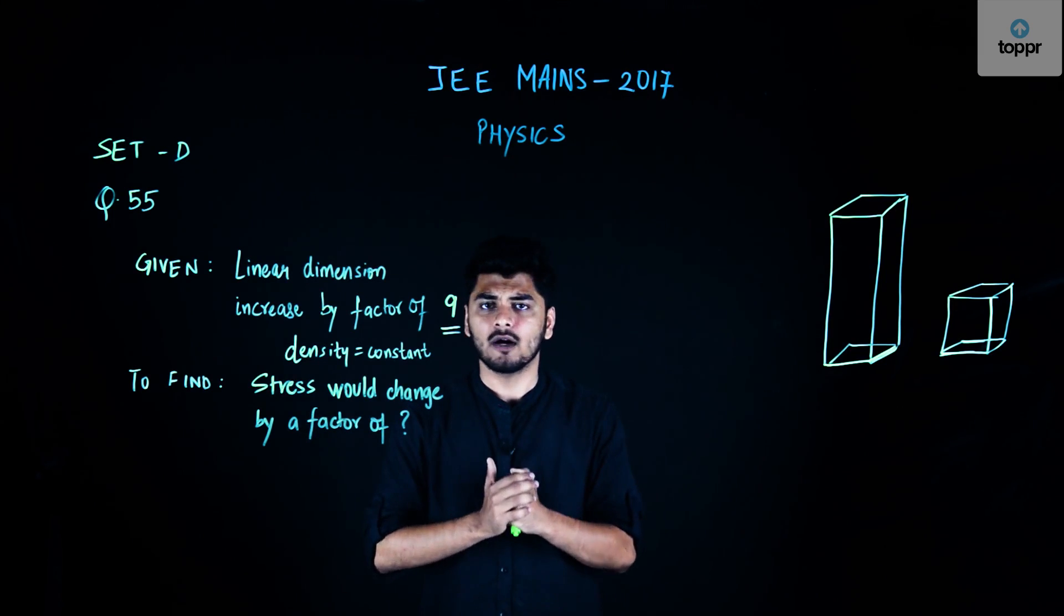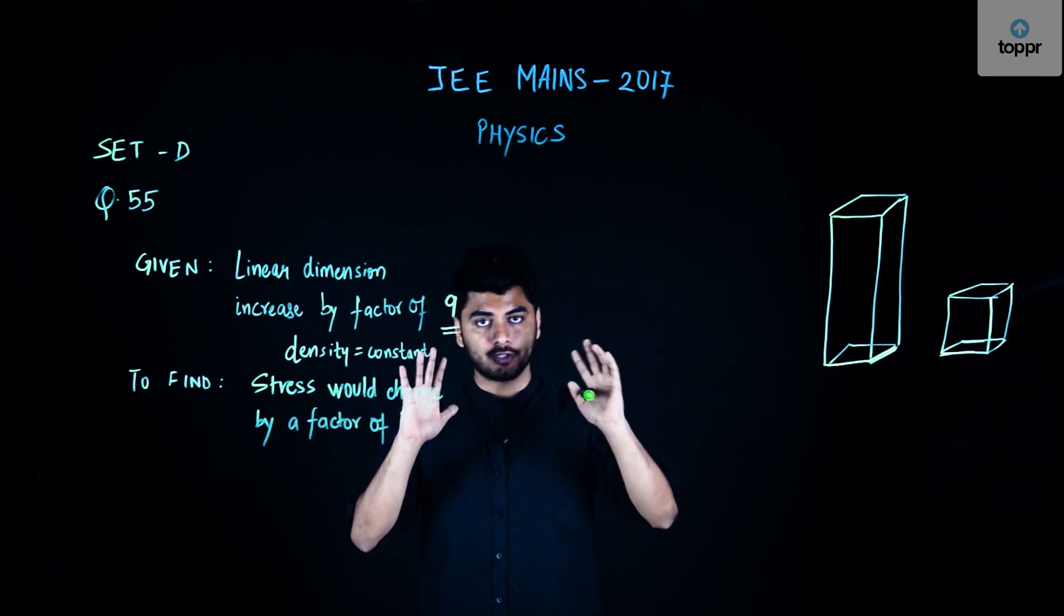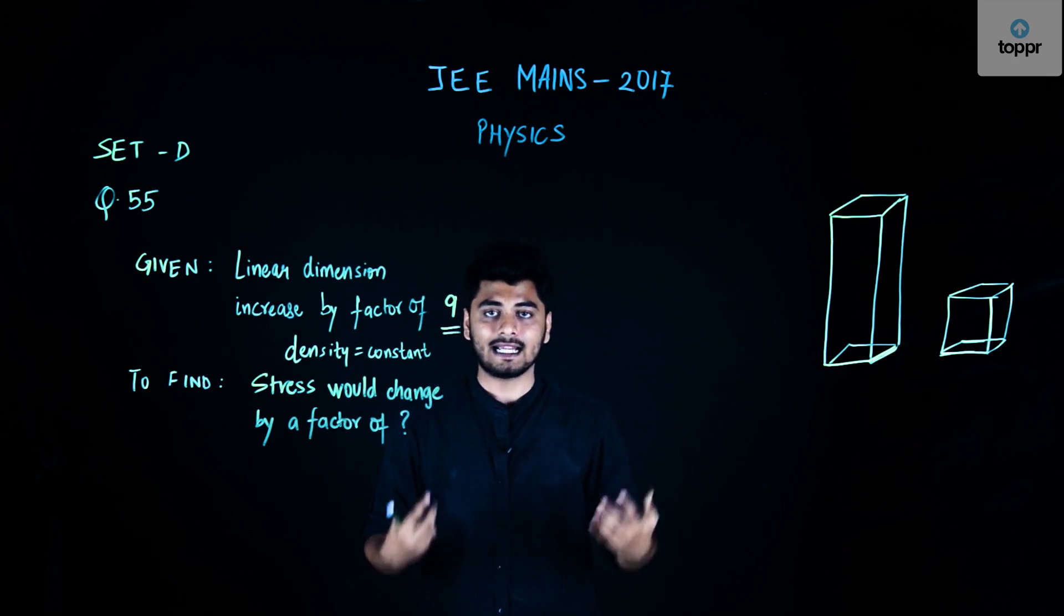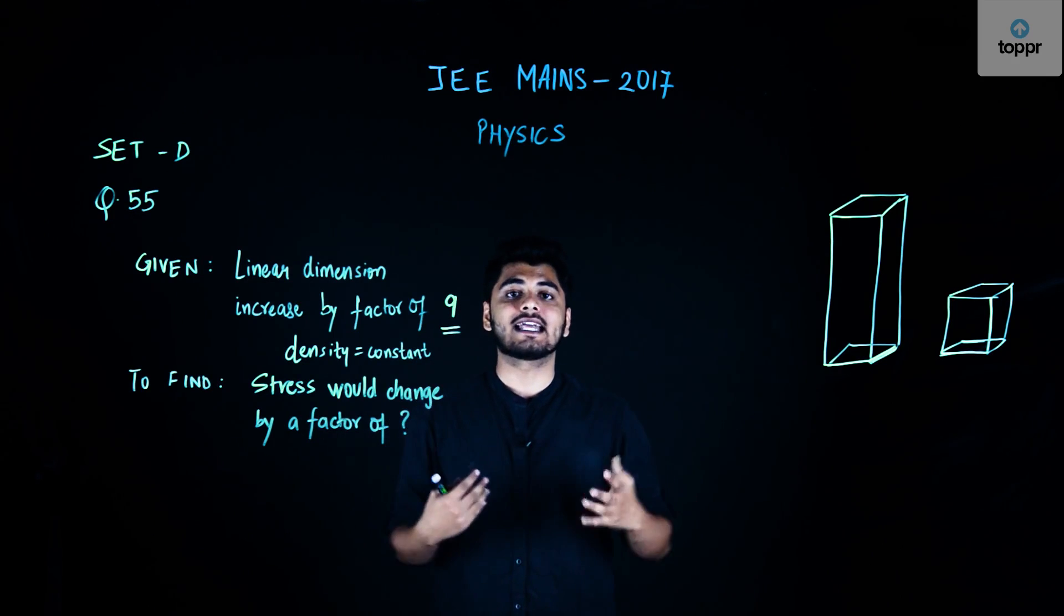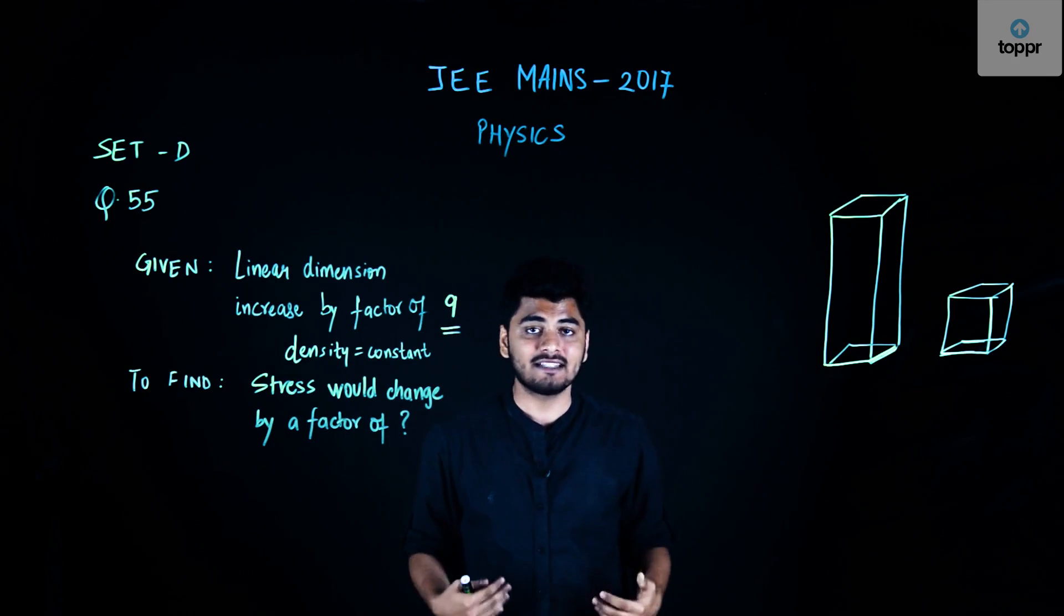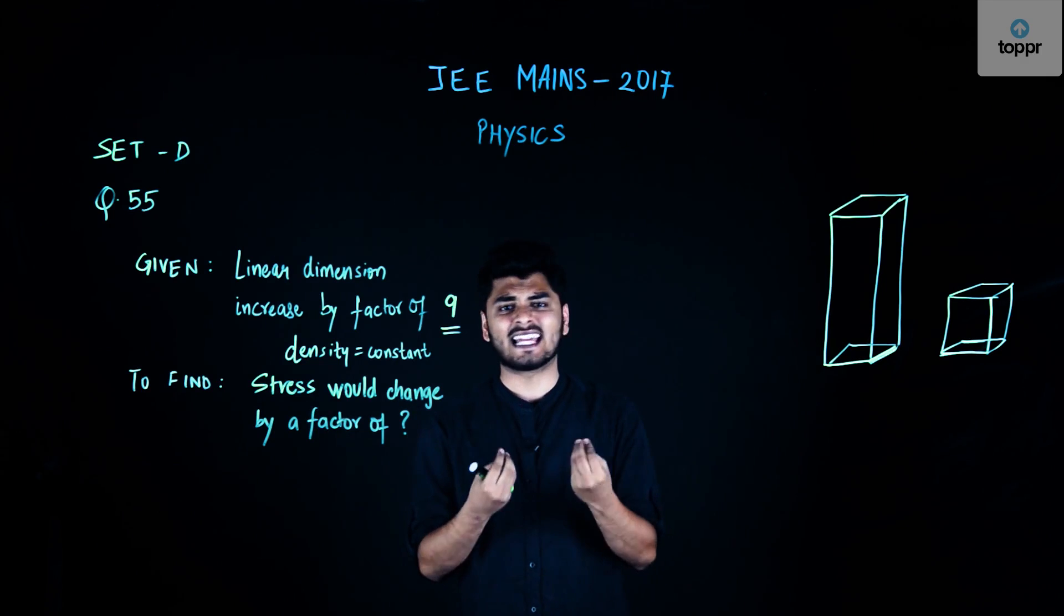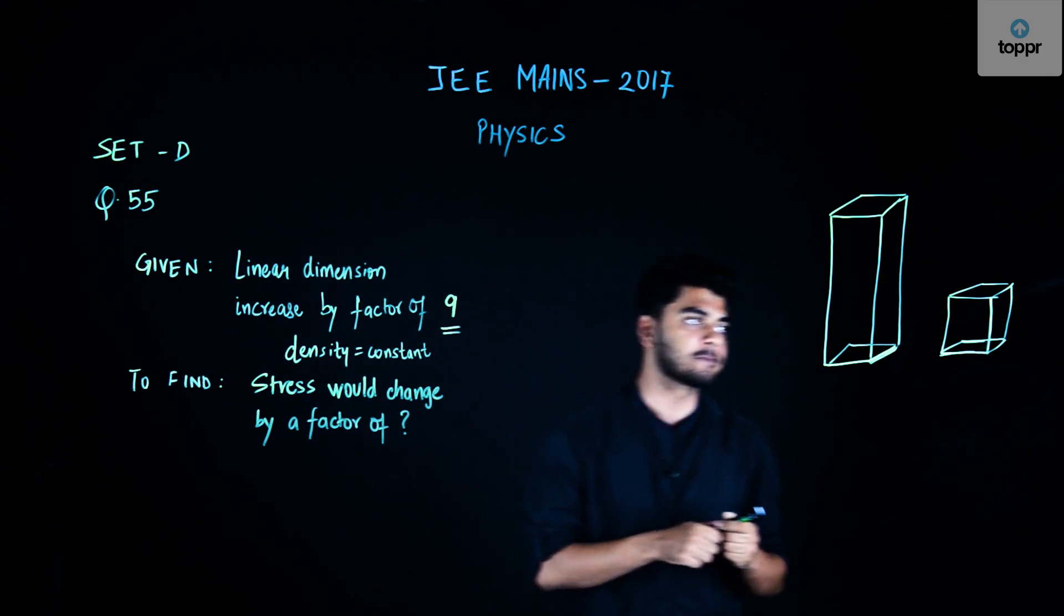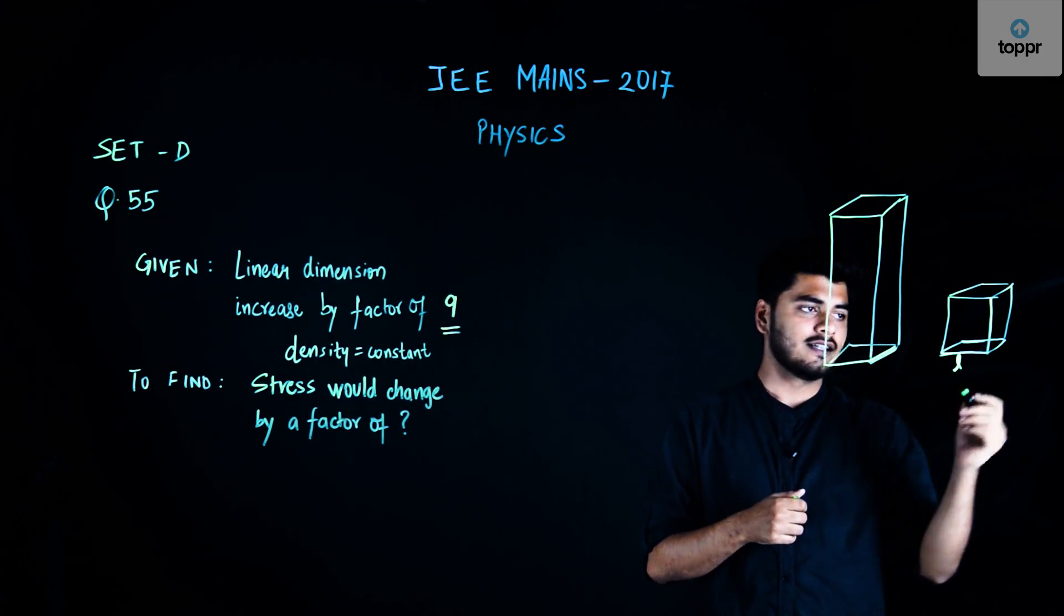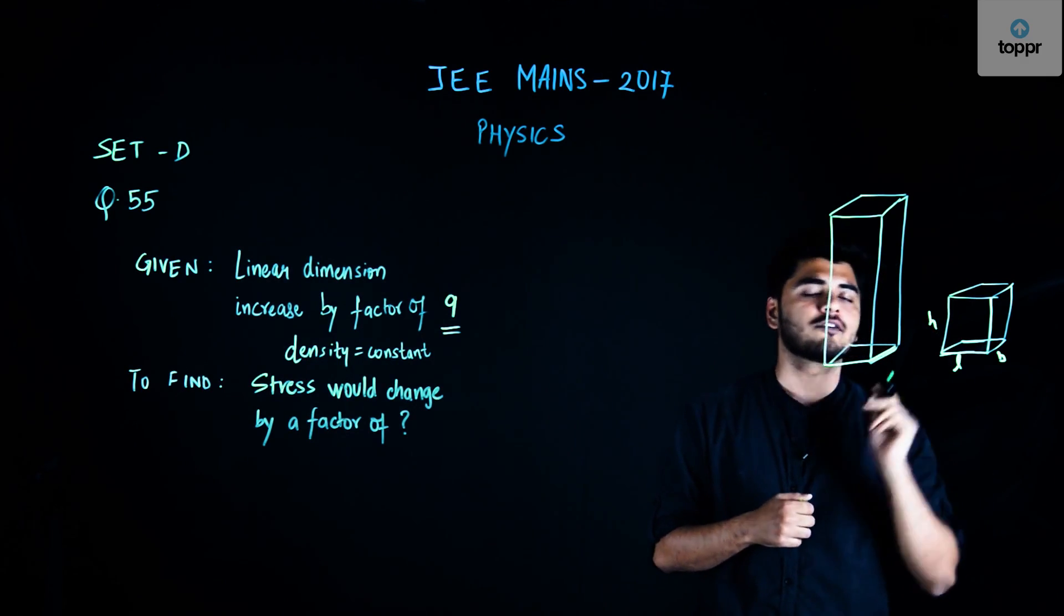The question is very simple. In order to solve this question, let us make an assumption. Instead of a complex figure, let us assume myself as a cuboid. The cuboid has three dimensions: length, breadth, and height.